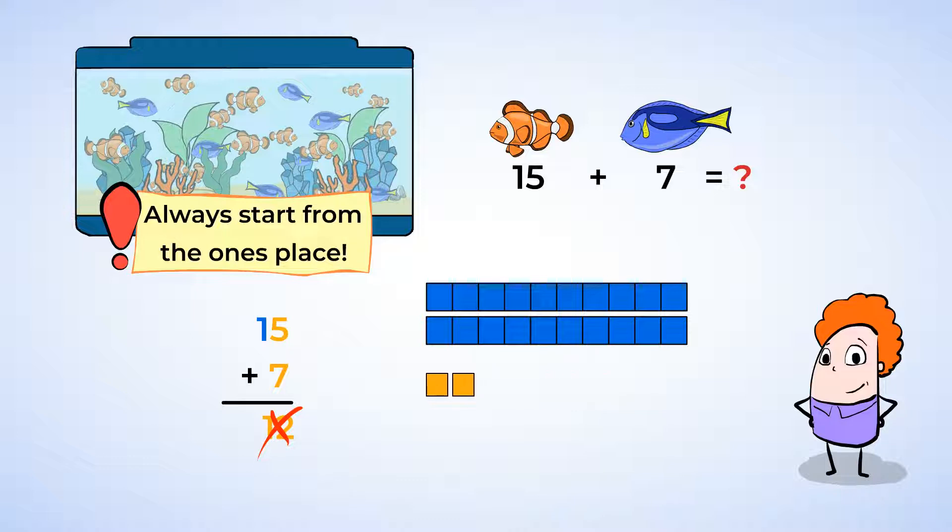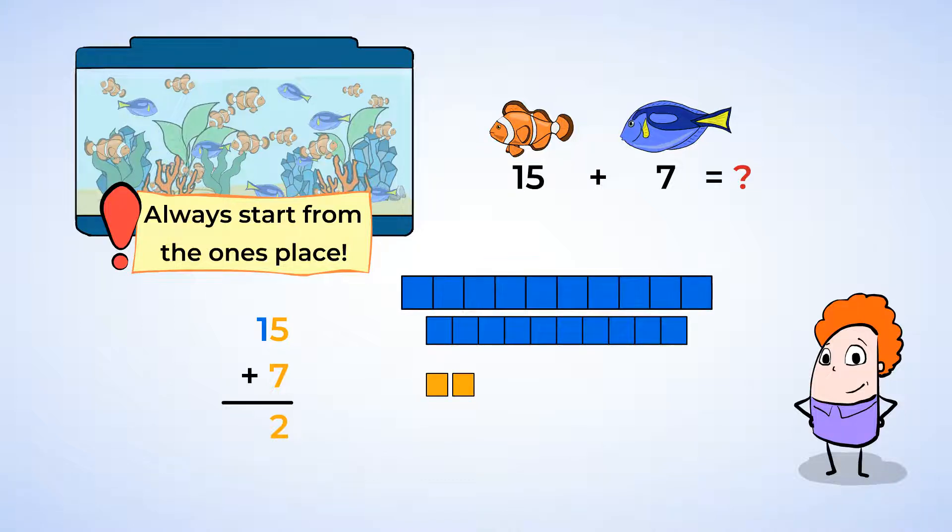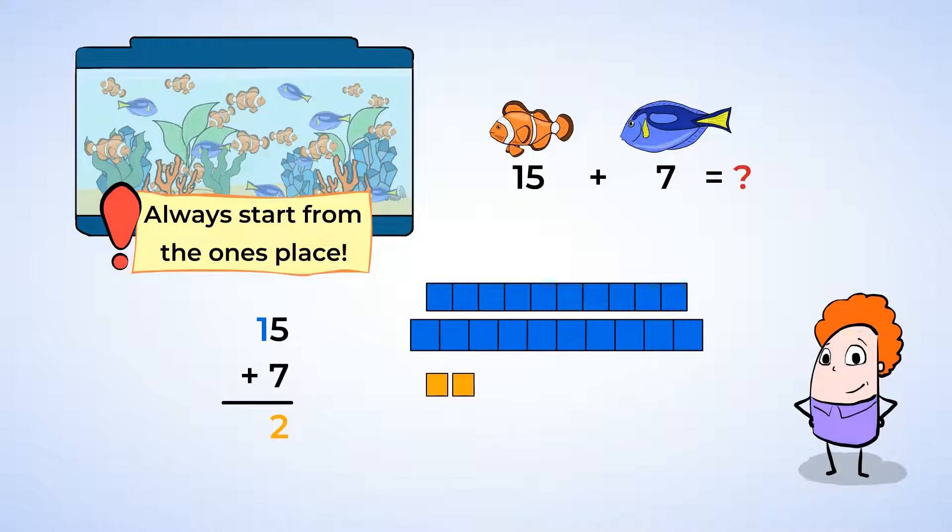Now we have 2 unit cubes left, so there is a 2 in the ones place. Our ones place is done! Now let's work on the tens place. We had one 10 from the number 15, and we just regrouped a 10 from our ones place.